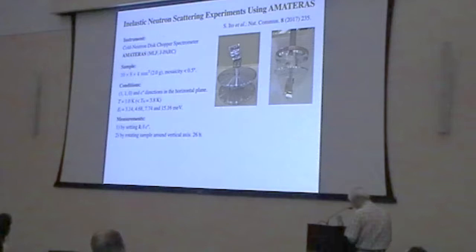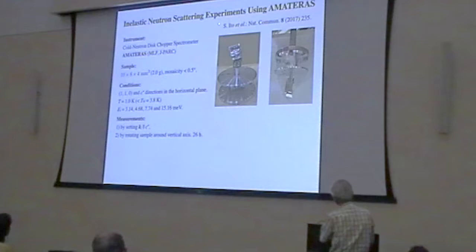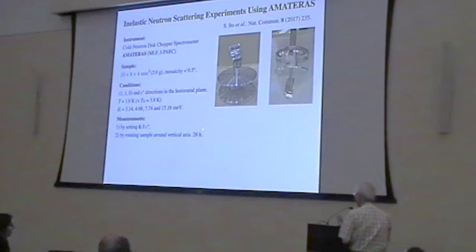We also measured excitation using inelastic neutron scattering. The instrument we use is the cold neutron disk chopper spectrometer installed at the Materials and Life Science Facility J-PARC. The single crystal was aligned for measurement. We first set the incident energy and obtained a trial of the excitation, and then we measured excitation in detail by rotating samples. By rotating samples we can access a wider momentum space.